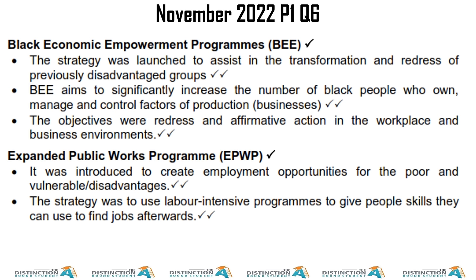Moving on to the second essay — policies that were implemented. Knowing that there was the Black Economic Empowerment Act earns one mark, and explaining what it is earns two marks. Expanded Public Works Programme: one mark for naming it, two marks for explaining it. This proves that you get marks just for knowing the headings. The only time you don't get marks for headings is when they're already given to you in the question.